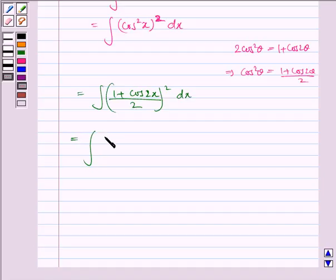Now we have 1/4 times the integral. Here we'll apply the formula (a+b)². So we have 1², which is 1, plus cos²2x, plus 2 times 1 times cos2x, which is 2cos2x, dx.